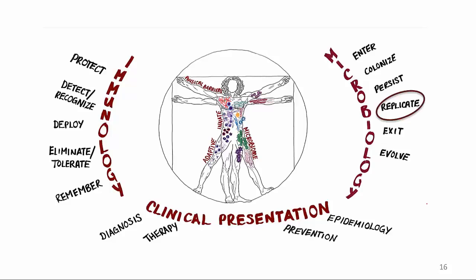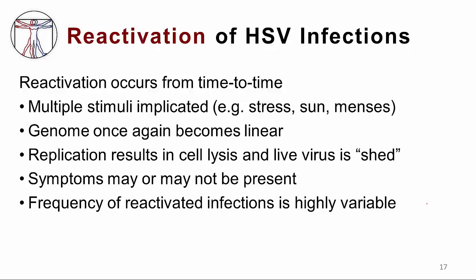Understanding what happens next is reactivation. The virus may reactivate from its site of latency from time to time, following several different kinds of stimuli, which could include stress, sun, or the menstrual cycle. When the virus begins to reactivate, it goes from the circular state it had in latency back to a linear state. The replication results in cell lysis, and the virus is now shed from the original site of infection. This shedding may be associated with symptoms, or it may be asymptomatic.